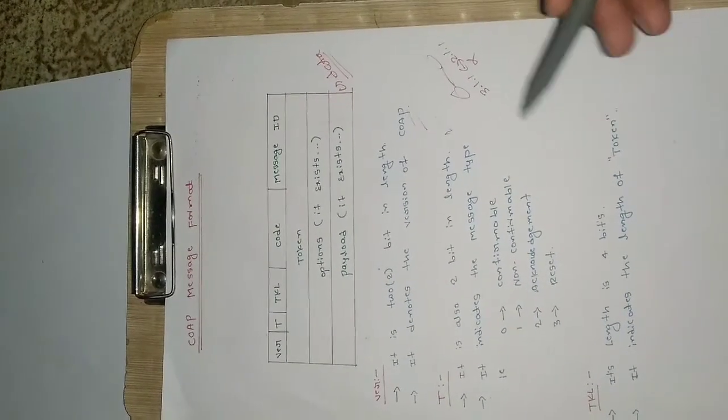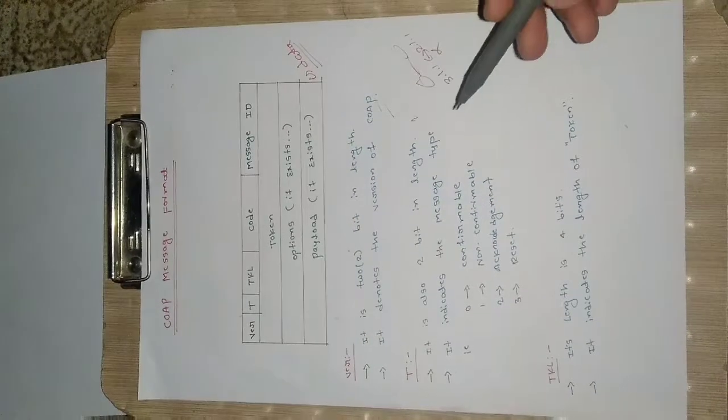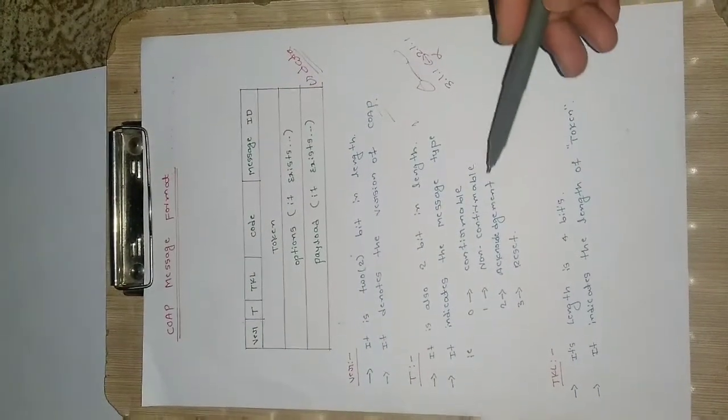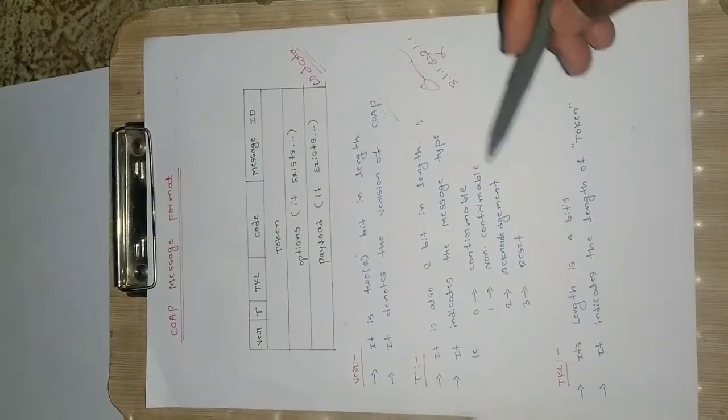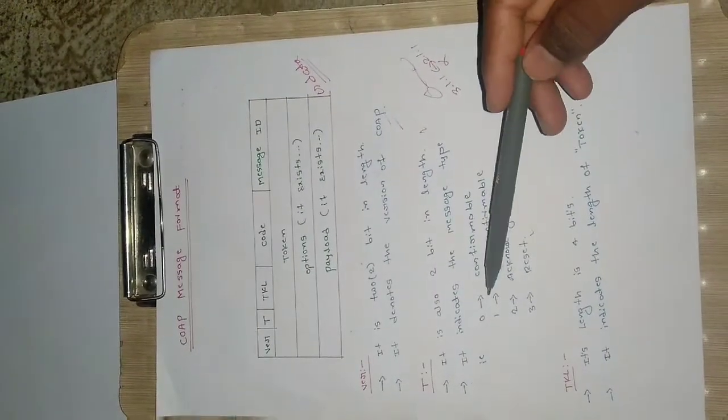The second field is 't'. It is also two bits in length and it indicates the message type — what type of message we are sending. It can be confirmable, non-confirmable, an acknowledgement for some request or response, or a reset. They have assigned codes for each of these types.